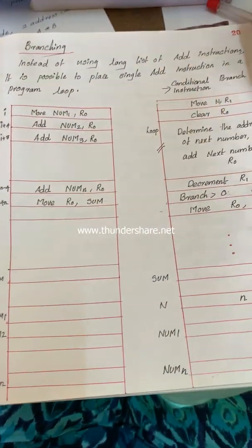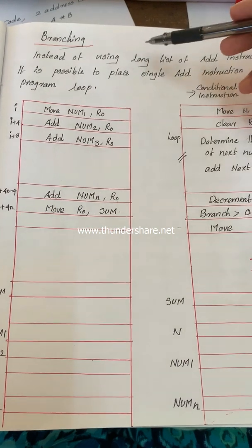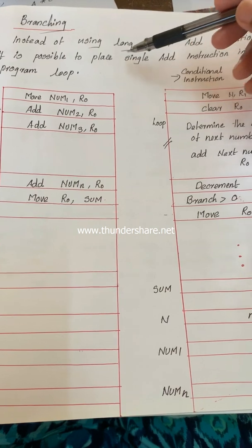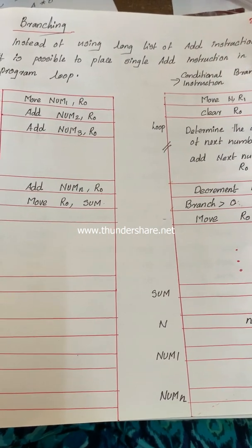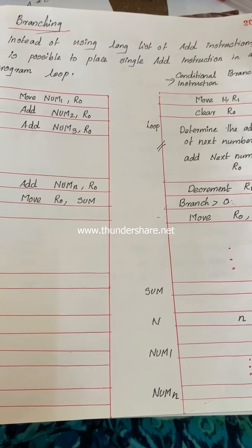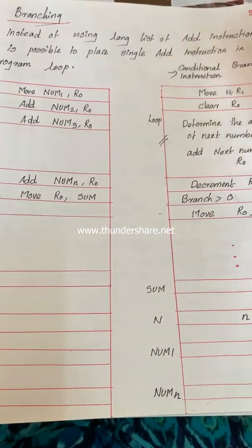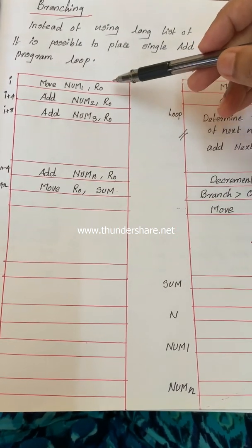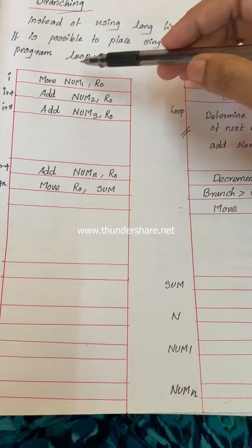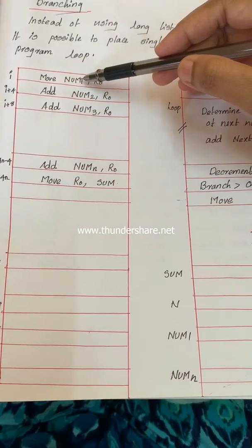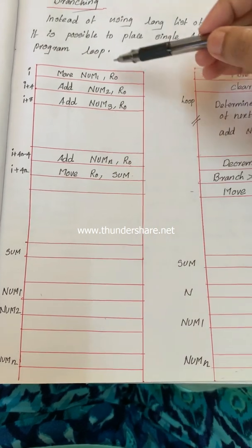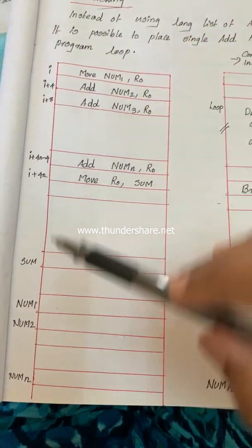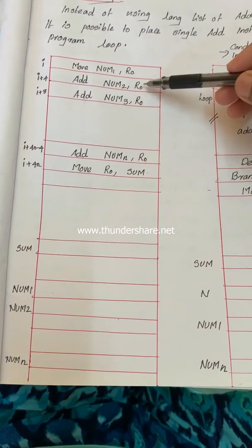There is another situation: branching. Instead of listing instructions sequentially, we can add looping statements to our program. For example, suppose we want to find the sum of N numbers. We could represent the program sequentially — move the value at memory location number 1 to register R0, then add the value at location number 2 with the content of R0.